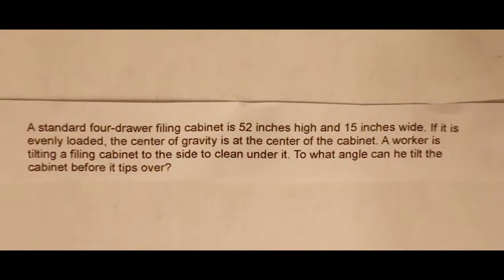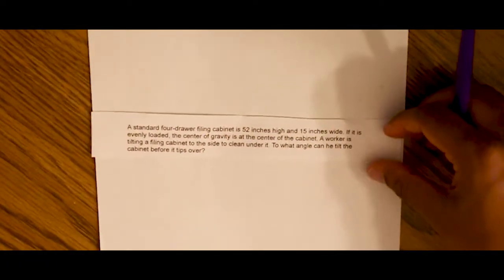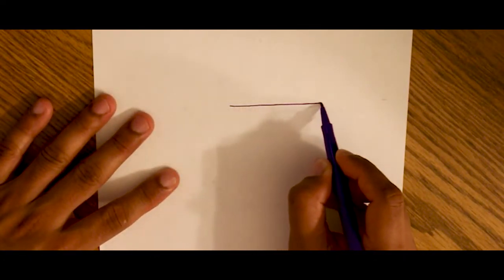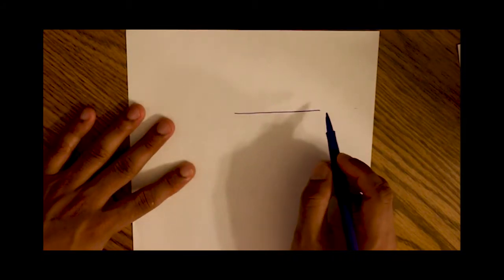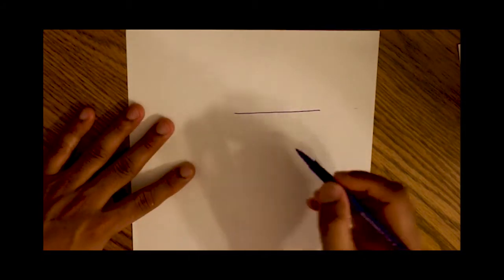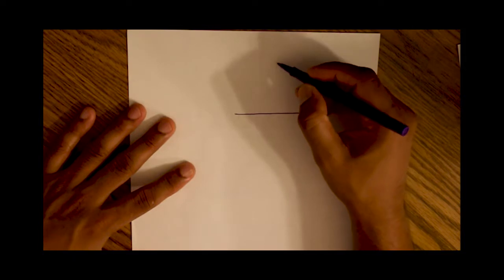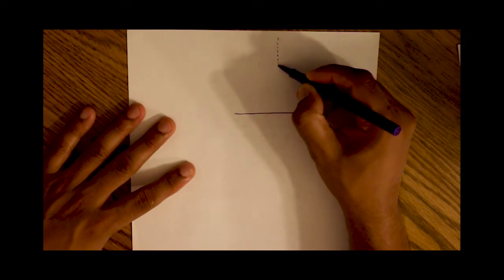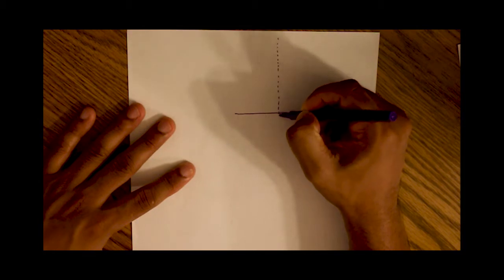So let's draw what's going on here so that we can understand it visually. Let's say this is the surface of the floor. It's flat. This is a flat surface. And let's draw a perpendicular, imaginary perpendicular to the surface.